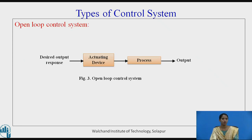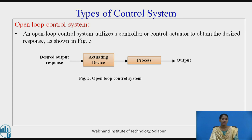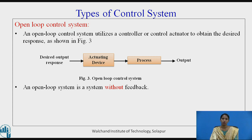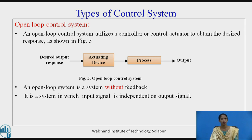Let us see the types of control system. First is the open loop control system. An open loop control system utilizes a controller or control actuator to obtain the desired response. It is a system without feedback. The actuating device gives the signal to the process, and the process leads to the output. In an open loop system, the input signal is independent of the output signal.